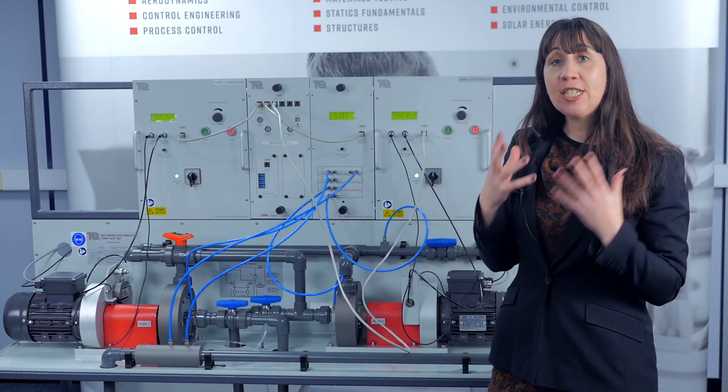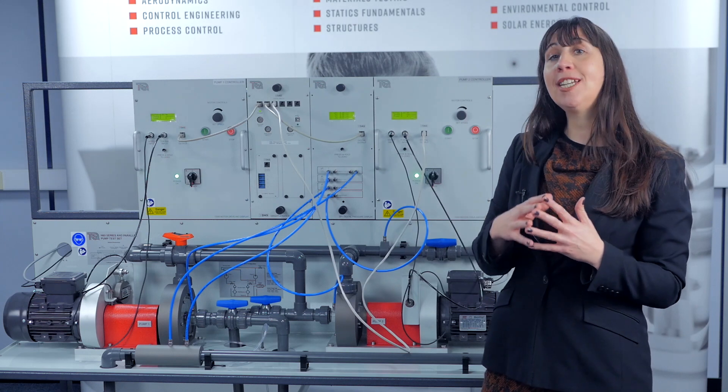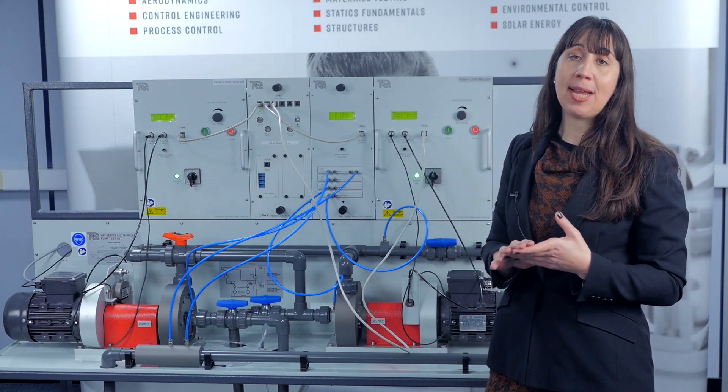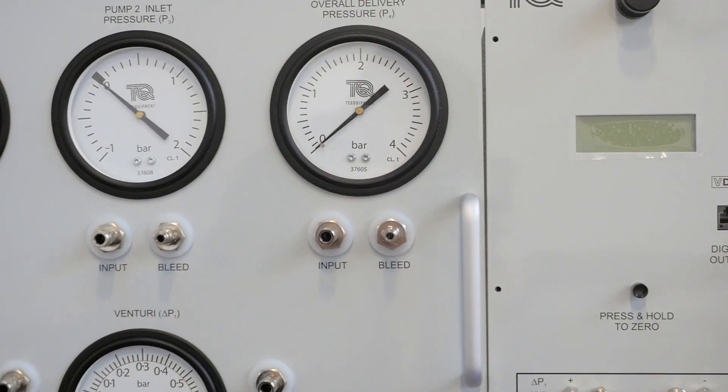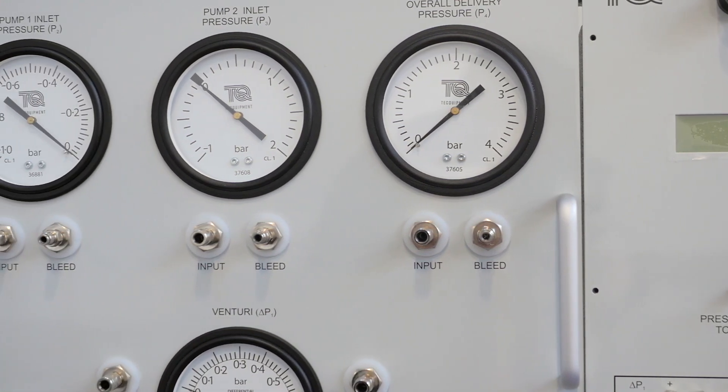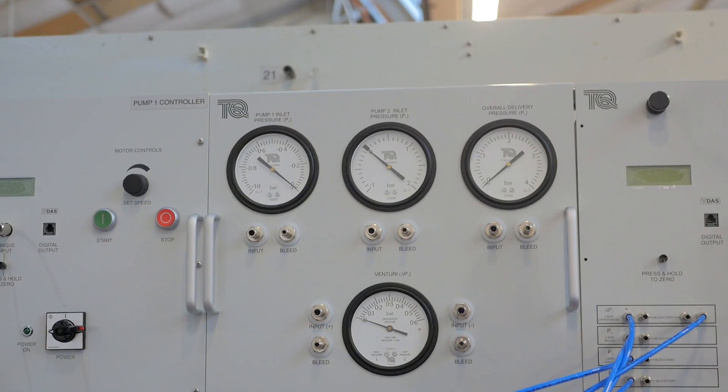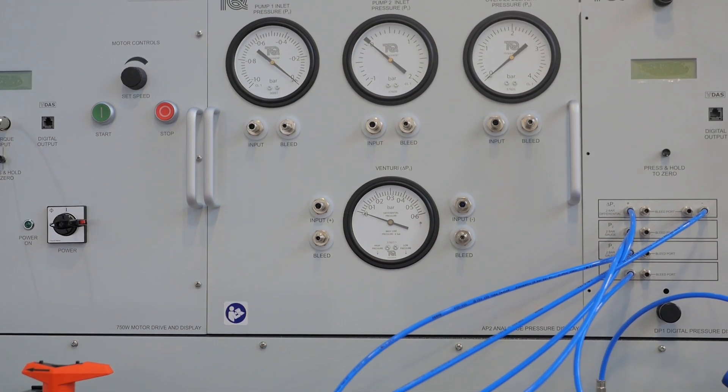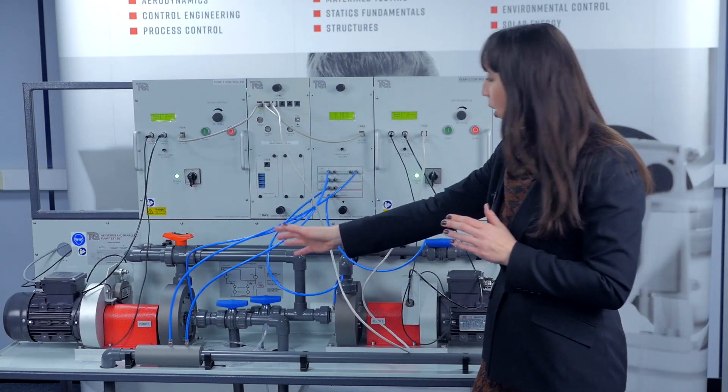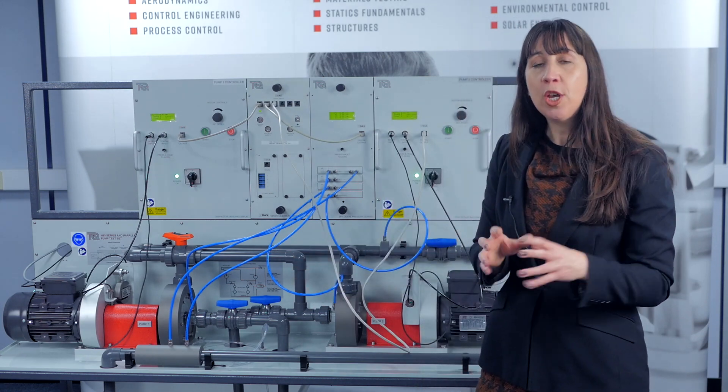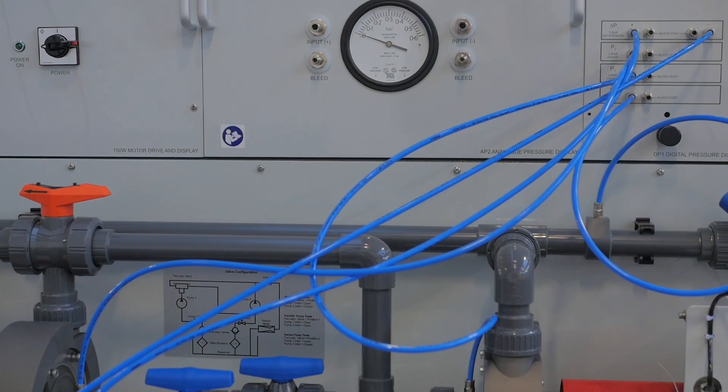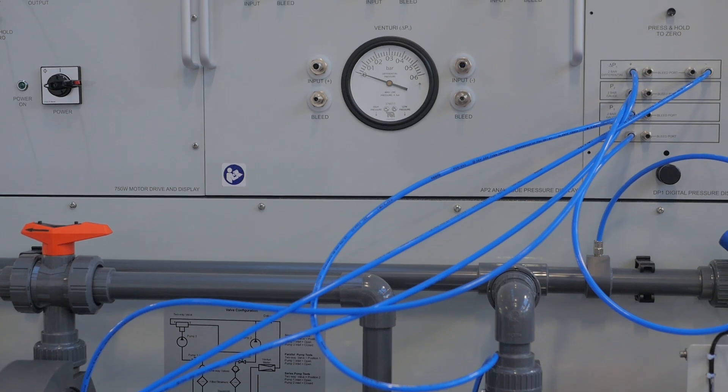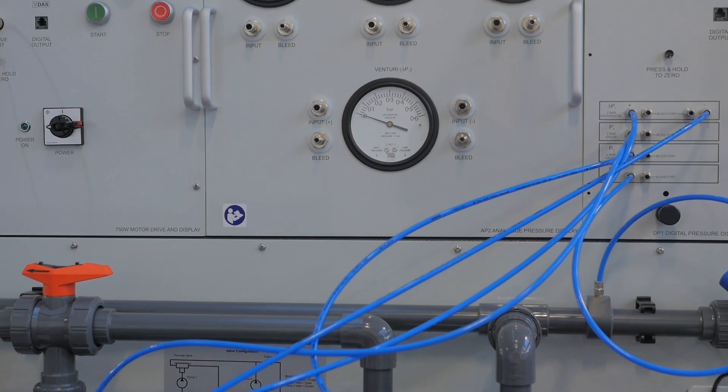For a more interactive learning experience, Tech Equipment also offers an easy to read analog pressure display, the AP2. The top three gauges measure the pump inlet and outlet pressures. The bottom gauge is a differential gauge which shows the pressure difference between the two tappings on the venturi meter. You'll notice bleed outlets on each of these gauges for bleeding out trapped air in the system at the beginning of each experiment.